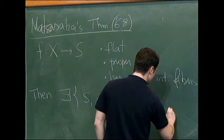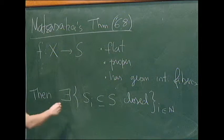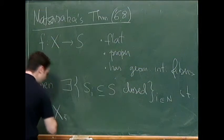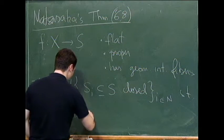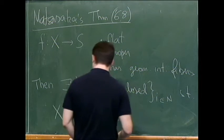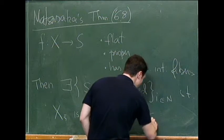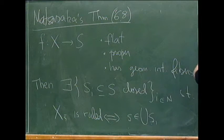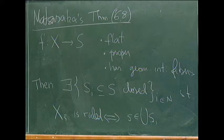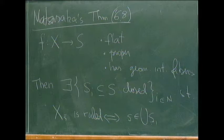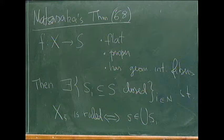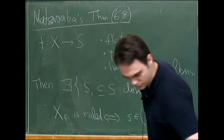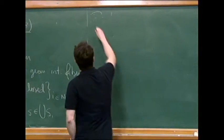Subvarieties such that the geometric fiber over a point is ruled if and only if the point belongs to the union of this, to the countable union of these S_I's. So it's from this result that the very general assumption comes from.